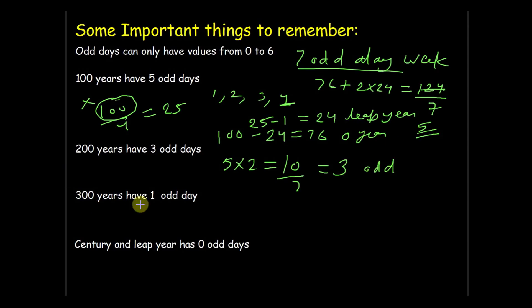Same for 300 years have 1 odd day. 5 multiply by 3 equal to 15, then divided by 7 gives us 1. And the last one is century and leap year has 0 odd days. Suppose for example we take 400, a century year, and we know as it is also divisible by 400 so it is a leap year.